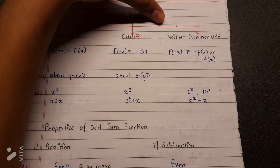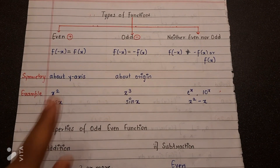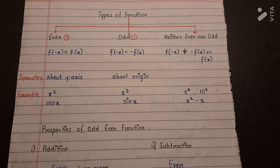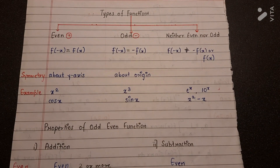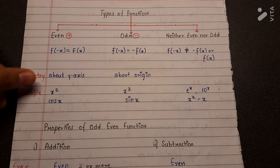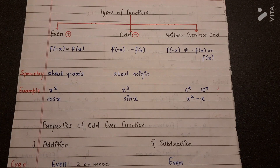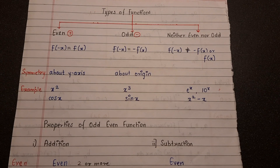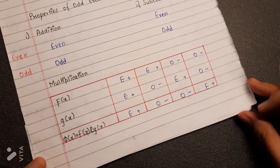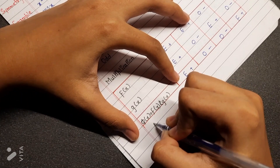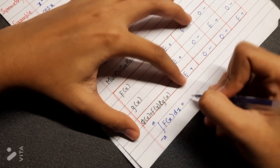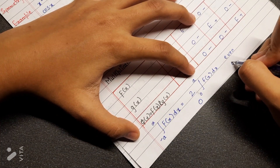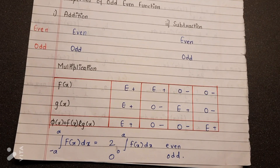There are basically three types of functions: even, odd, and neither even nor odd. Functions where f(−x) = f(x) are even functions. Functions where f(−x) = −f(x) are odd functions. Even functions are symmetric about the y-axis; odd functions are symmetric about the origin. Examples of even functions are x² and cos x. One important theorem: ∫₋ₐᵃ f(x) dx equals 2∫₀ᵃ f(x) dx if the function is even, and 0 if the function is odd. I hope you liked this video, thank you.